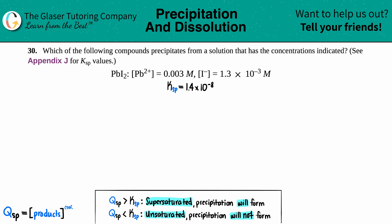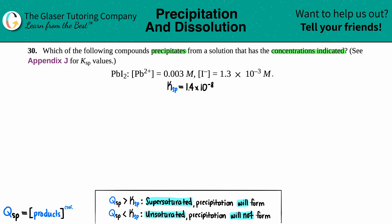Problem 30: which of the following compounds precipitates from a solution at the indicated concentrations? We need to find out if PbI₂ will precipitate given that the Pb²⁺ concentration is 0.003 M and I⁻ is 1.3×10⁻³ M. From the appendix, the Ksp value for PbI₂ is 1.4×10⁻⁸.